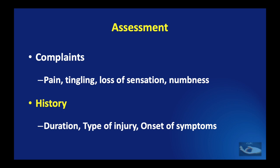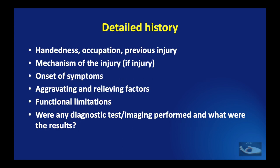A detailed history must be elicited. The hand dominance, occupation, and any previous injury should be recorded. The mechanism of injury if it was traumatic should be documented. The onset of symptoms — whether insidious or sudden — aggravating and relieving factors, and functional limitations should be analysed in detail. We also need to look for any diagnostic tests or imaging that has been performed and the results obtained.